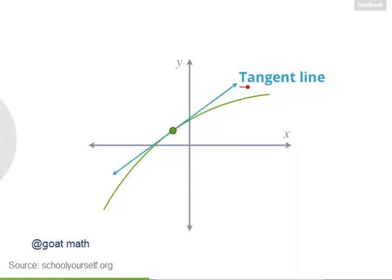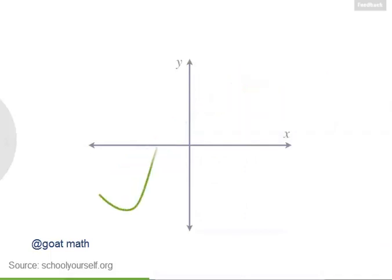It's the same word tangent like the trig function, but here tangent means that this line touches the function at a point and has the same slope as the function. Let's take another look at that function from the beginning.